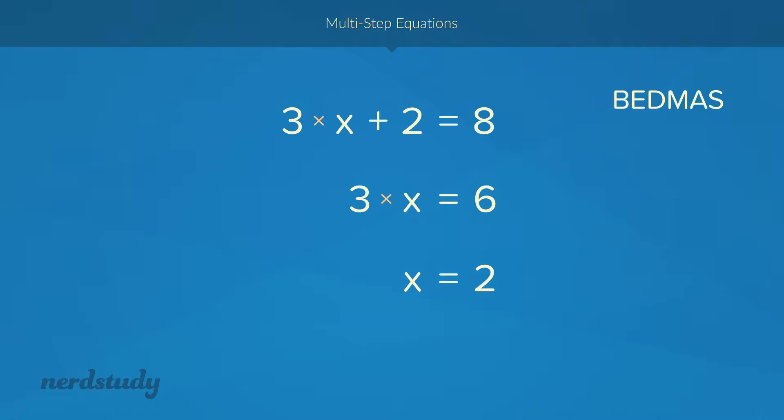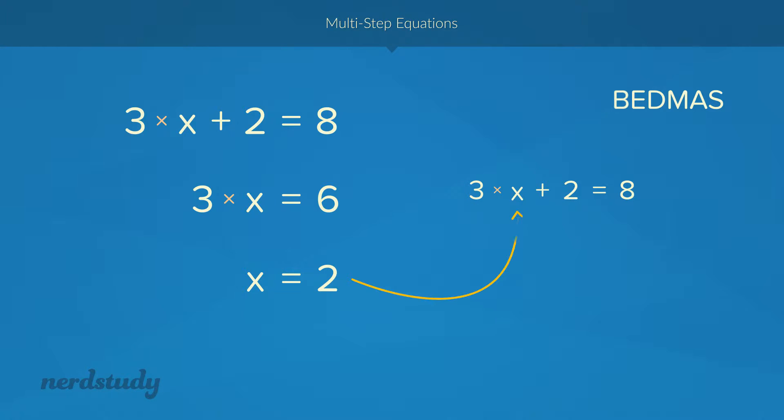As usual, we can always check our answer by plugging 2 into x to see if we get a true equality statement. So 3 times 2 is 6, and 6 plus 2 is 8. And 8 equals 8. So it looks like our answer is good.